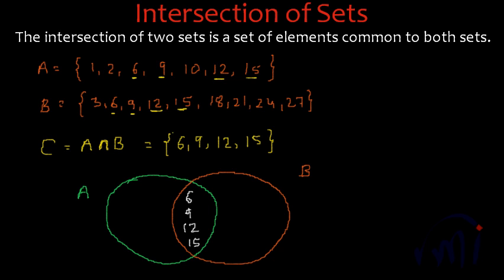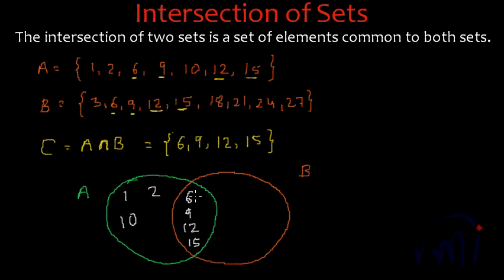All the other elements which are in set A will be written in the area which is not overlapping with set B. So they will be 1, 2, 10 — and that's all. All the other elements are there in set B also, so that is why they are coming in this overlapping area.